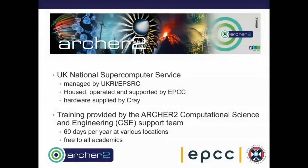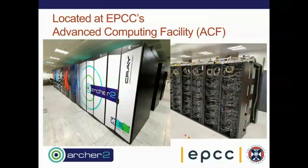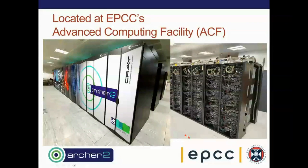This is what ARCHER2 looks like. It sits at the university's data center, about six or seven miles outside Edinburgh, in a big room with lots of cooling and electricity running into it. It has a nice picture on the front of it, but most of us don't get to see that because it's locked away in a room we don't actually go into. If you looked inside these cabinets you'd see they're full of computers, cables, and plumbing — big silver pipes on top of the cabinets taking hot and cold water through to cool the system.